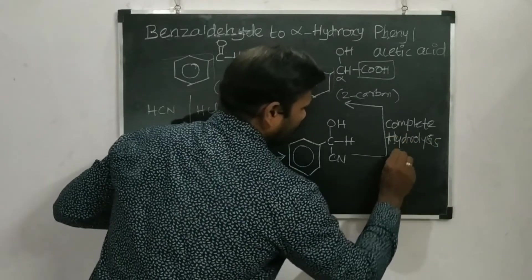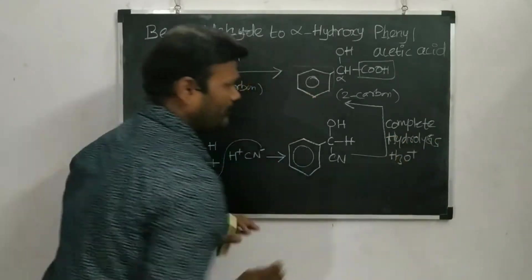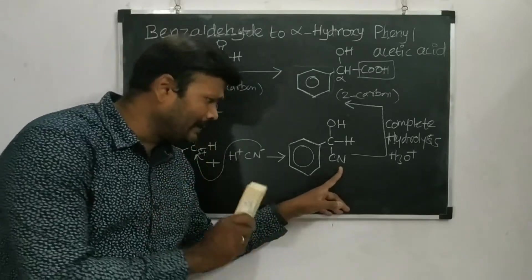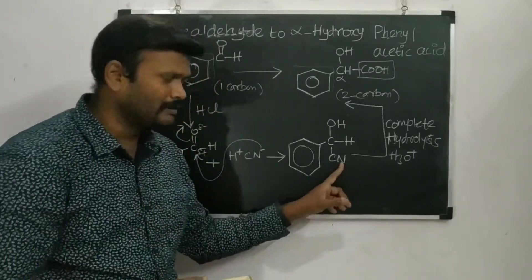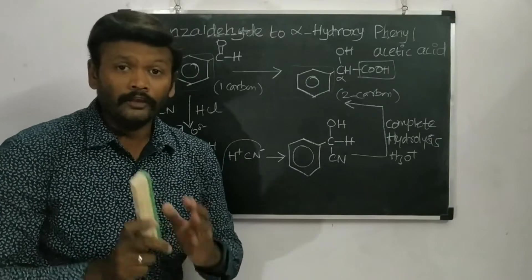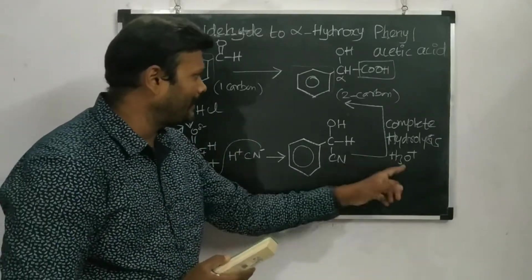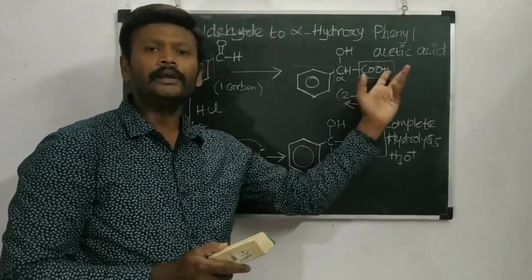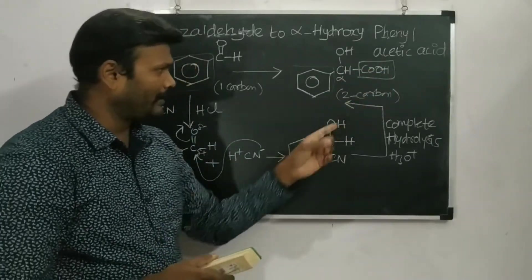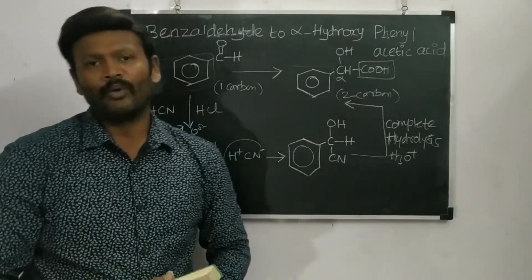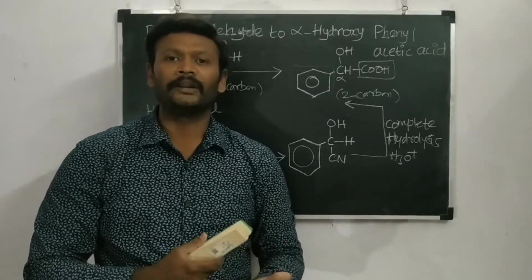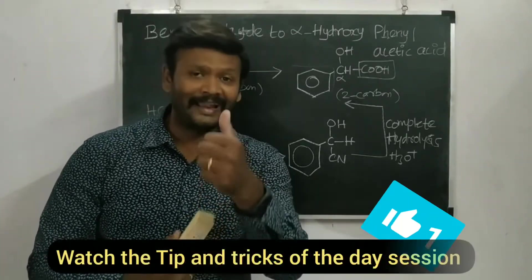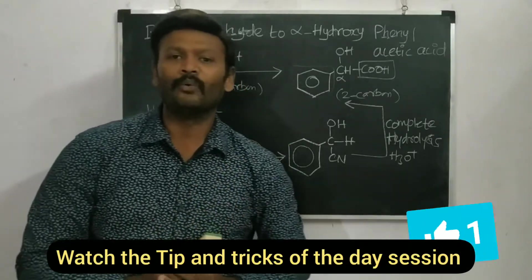Now we do complete hydrolysis of the cyanohydrin. I'm writing complete hydrolysis because if only partial hydrolysis is done, the cyanide group is converted only to an amide. Only complete hydrolysis will convert the cyano group into a carboxylic acid — giving us our final product, alpha hydroxy phenyl acetic acid. Thank you so much for watching; please share with others and subscribe to the channel.